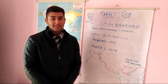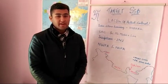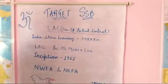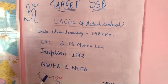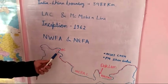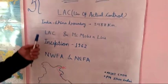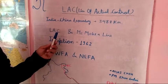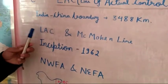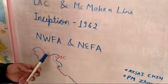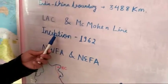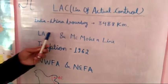Hello friends, welcome to Target SSB. Today I will be delivering a presentation on Line of Actual Control. Line of Actual Control is a demarcation boundary that is used to separate India and China from each other. India shares a boundary of 3488 km with its neighboring country China, and this Line of Actual Control basically separates both the countries from their territories.